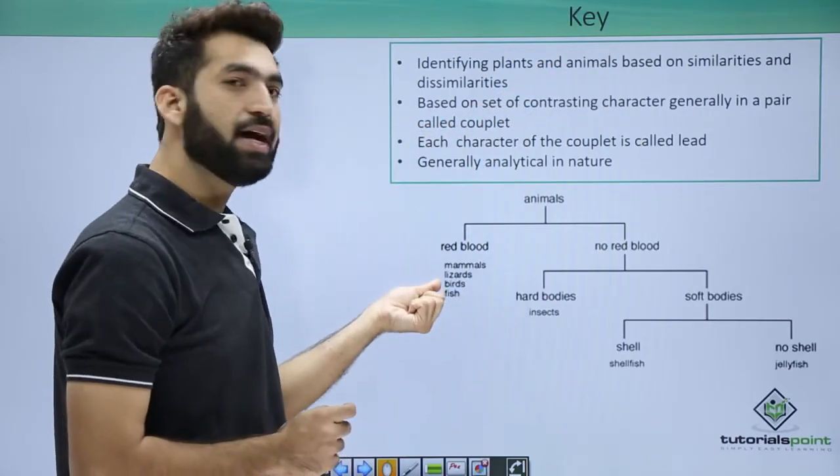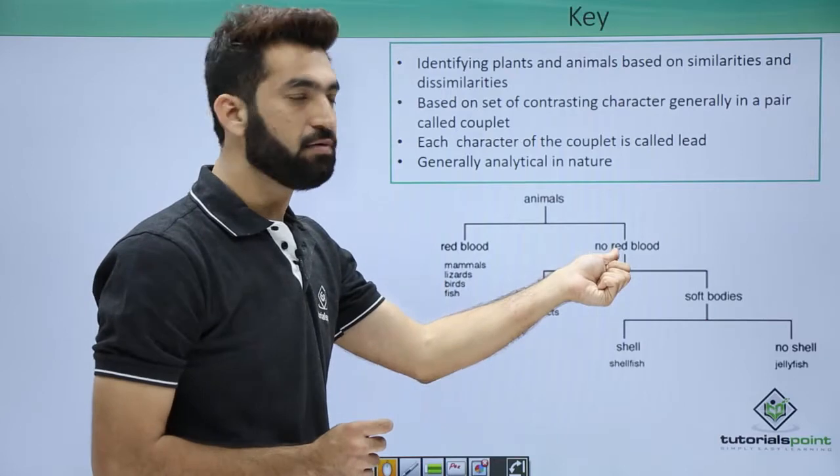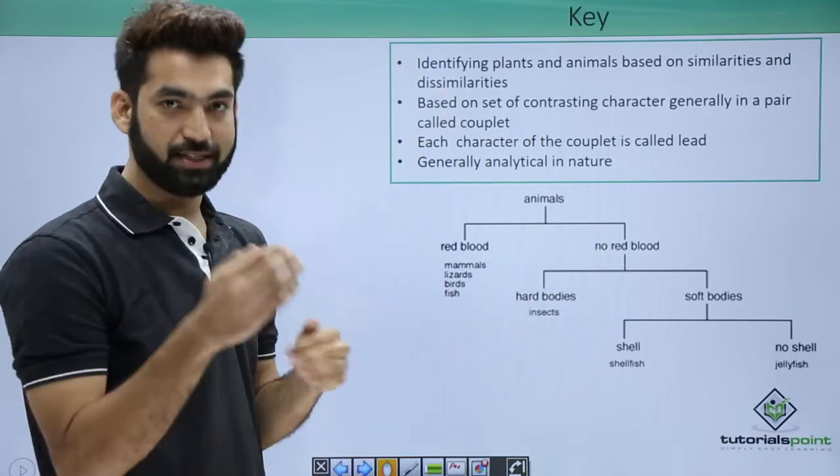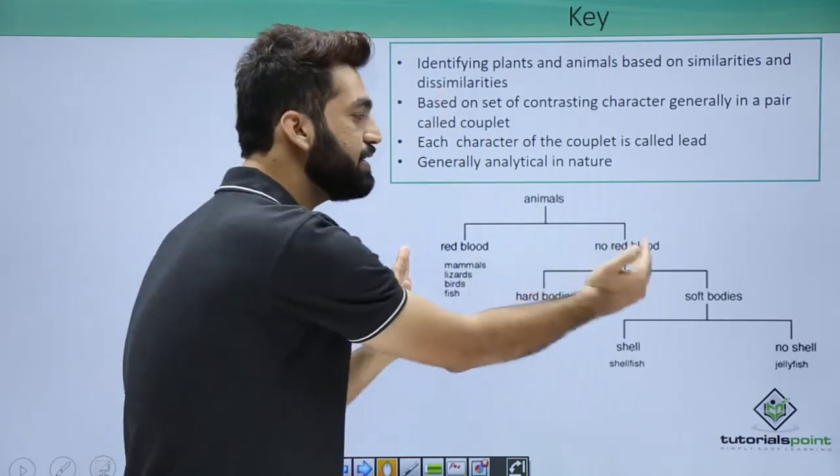You can talk about one having red blood and one having no red blood. So we talked about dissimilarities. Khi is a set of similarities and dissimilarities.